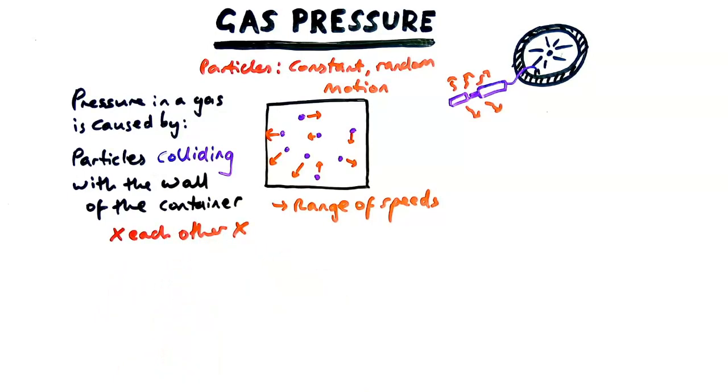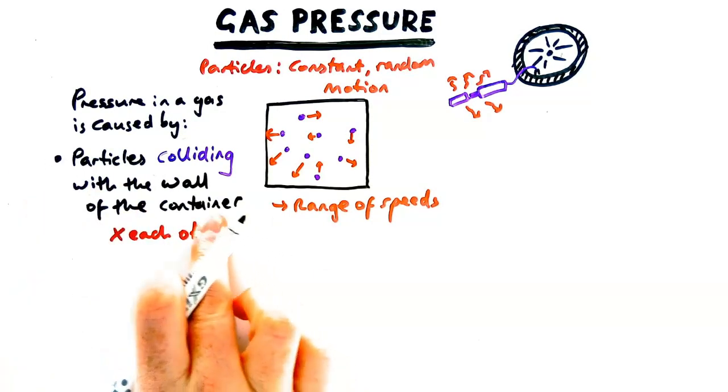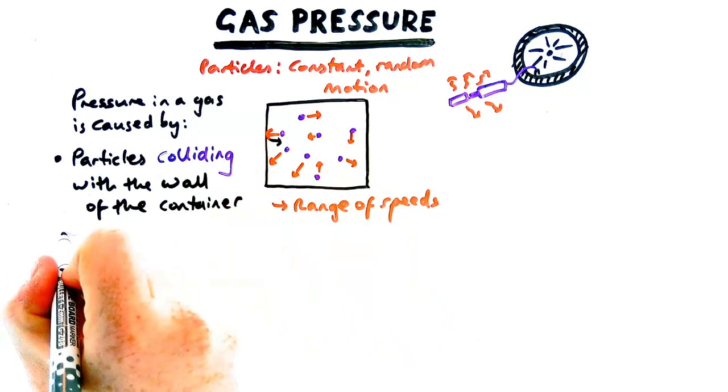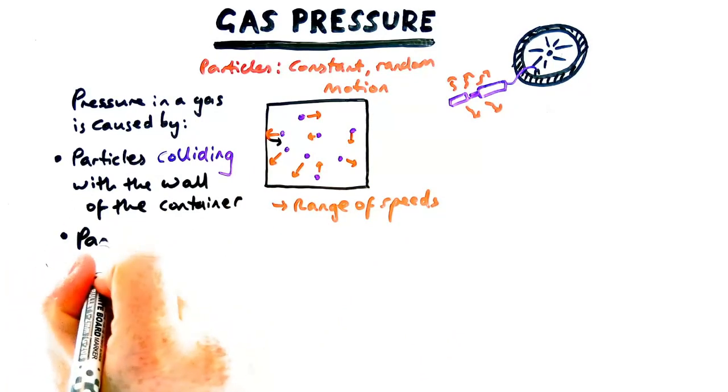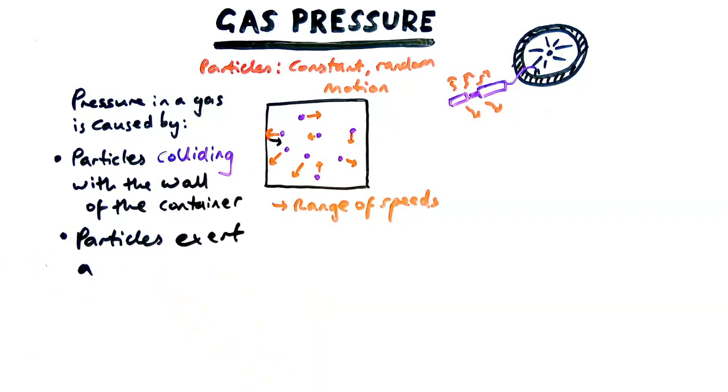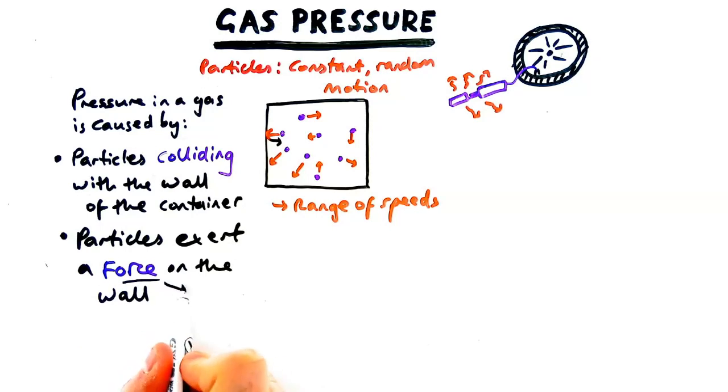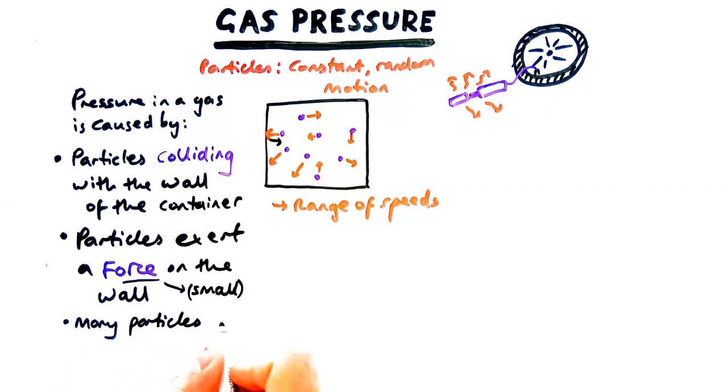Now the next thing is what happens when they collide with the wall of the container. When they collide with the wall or the tyre they exert a force. So particles exert a force on the wall of the container. Now this force is pretty small but when you build it up for millions of particles over a period of time many particles will exert a large force on the container.